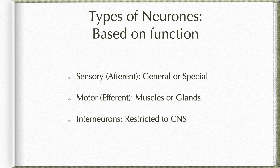Neurons can be classified based on function as sensory neurons, motor neurons, and interneurons. Sensory neurons carry either general or special sensation towards the central nervous system. Motor neurons carry the nerve impulse from the central nervous system towards the effector organs. Interneurons are restricted within the CNS — they are the largest number of neurons and they connect one type of neuron to the other.